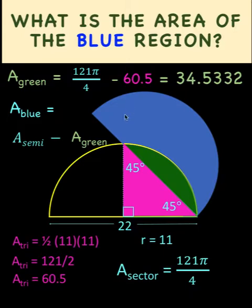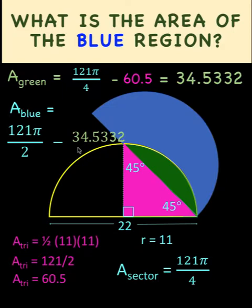What is the area of the semicircle? It's pi r squared over 2, where r is 11. So 11 squared is 121 times pi divided by 2 to get the area of the semicircle. And the area of the green region is already calculated to be 34.5332.